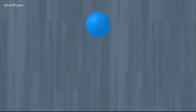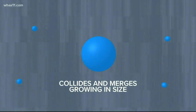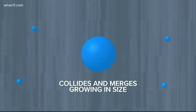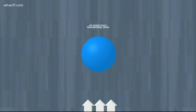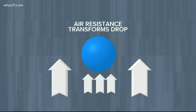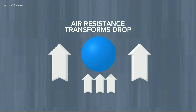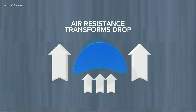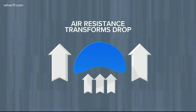With time, the drop grows larger and heavier. It starts to fall. On its way down, it collides and merges with other smaller raindrops and continues to grow in size. As the bigger drop continues to fall, the air resistance increases on the underside and flattens it out. The raindrop now looks like the shape of a hamburger bun.